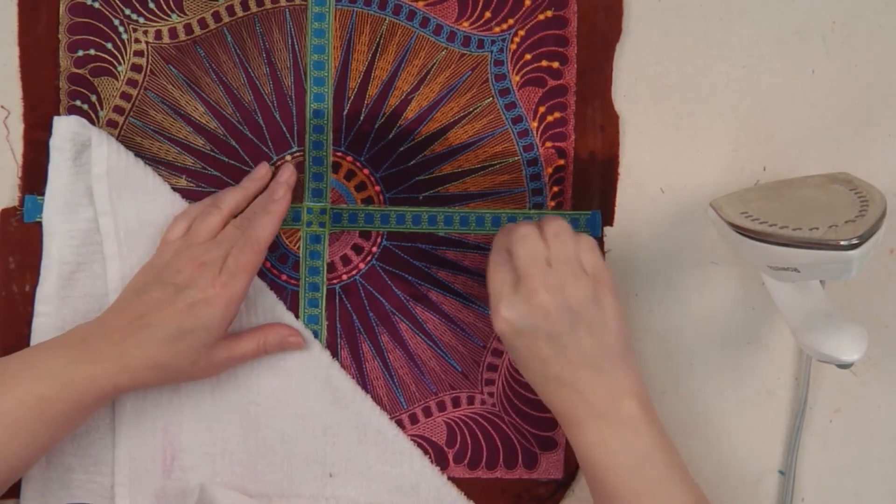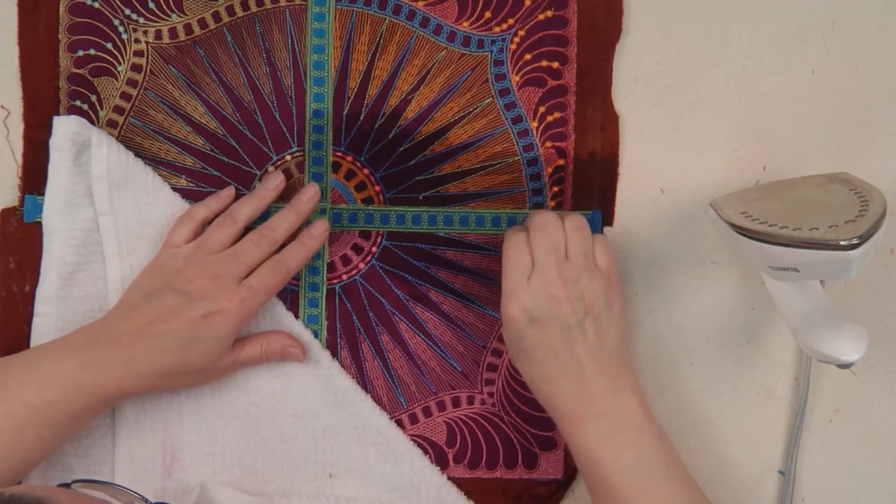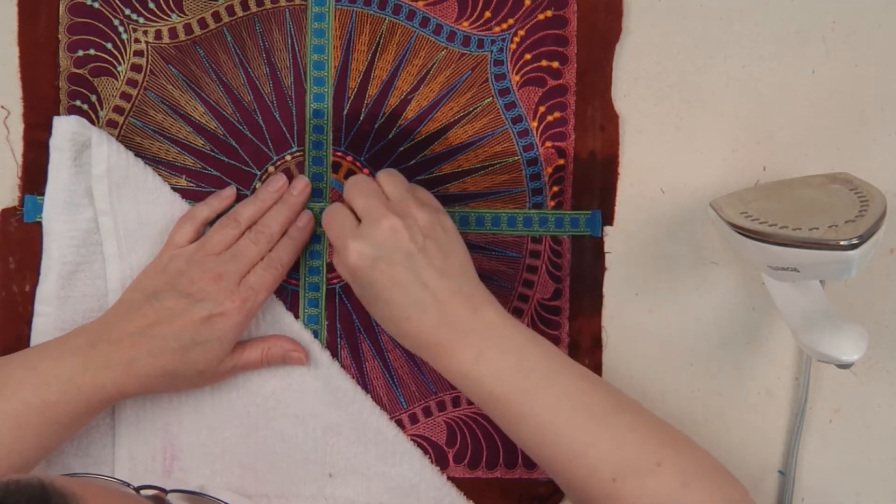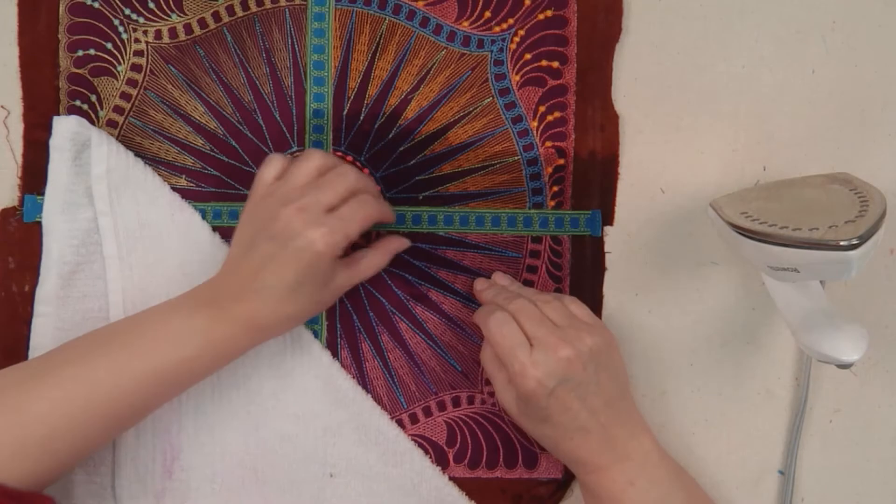And it's really gone. I'm actually pulling out the alignment thread that we used, and your water-soluble is all gone at that seam.